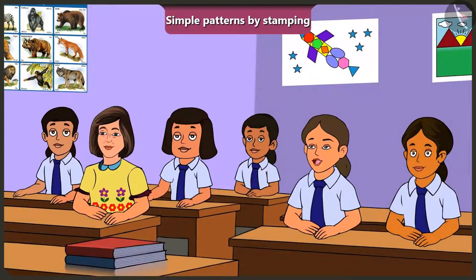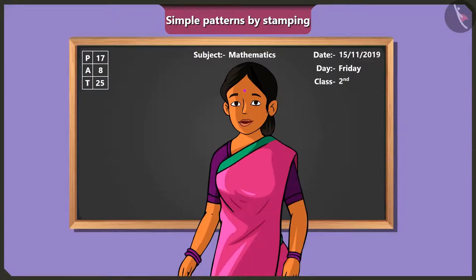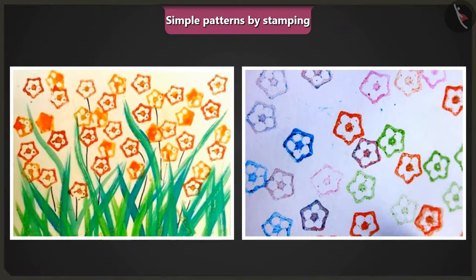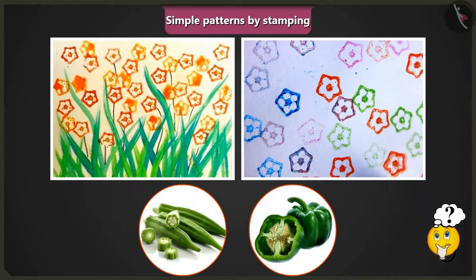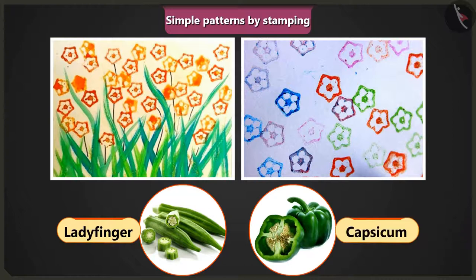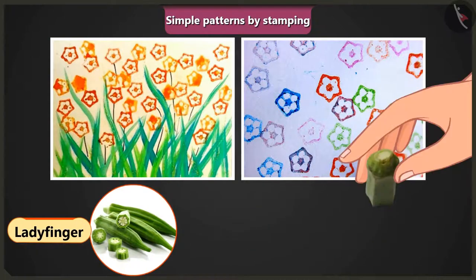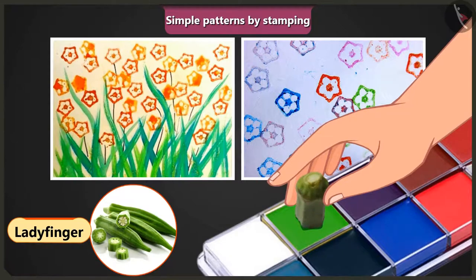Ma'am, can we make patterns using stamps in our drawing books as well? Yes, children. Come, let me show you some pictures that have been created by stamping. You have to tell me which objects were used as stamps to make these pictures. Which vegetable was cut and dipped in colour to get this pattern by stamping — lady's finger or capsicum? Ma'am, in these pictures, the pattern of lady's finger was stamped by cutting and dipping it in different colours.